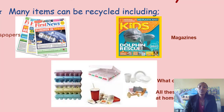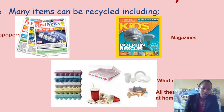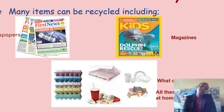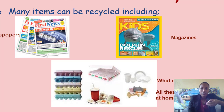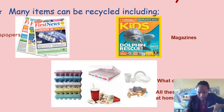So we have so many things that can be recycled, as you see in the picture. They include newspapers. In our homes, our parents normally come home with their newspapers, as you can see in the picture. We have also magazines. For example, the Kids Dolphin Rescue — that is an example of a magazine.